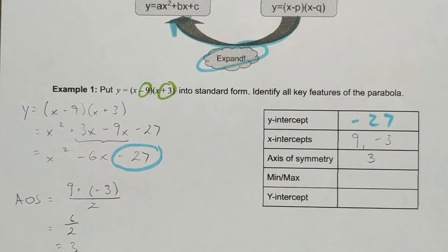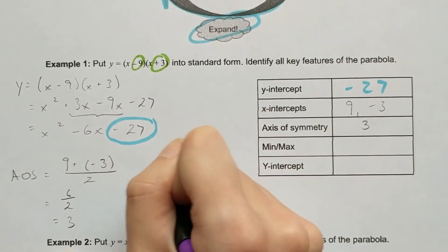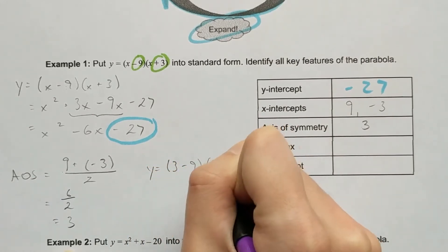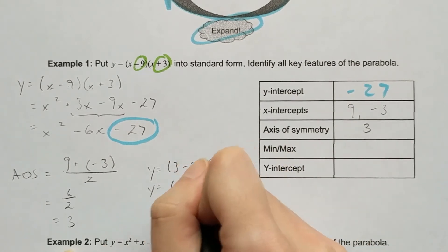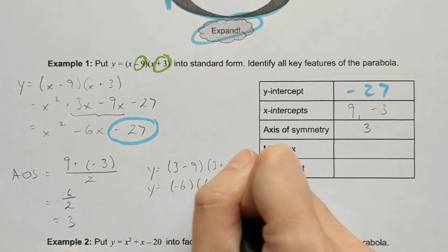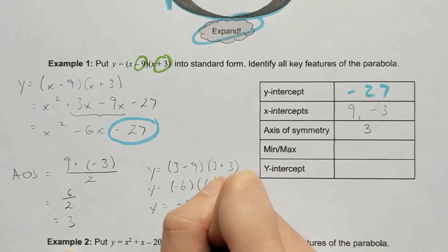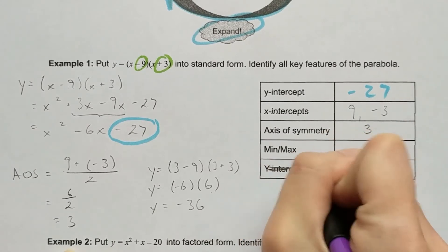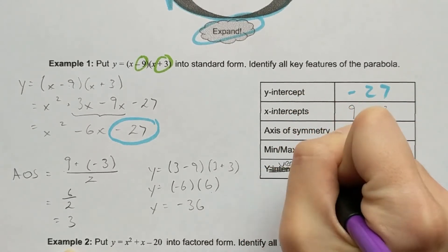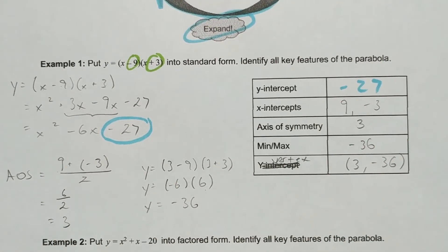In order to find my minimum or maximum, I need to plug x = 3 into my equation: (3 - 9)(3 + 3). That's (-6)(6), which equals -36. So my min or max is located at y = -36, and my vertex is at (3, -36).